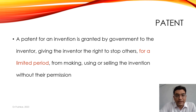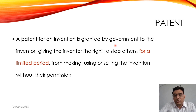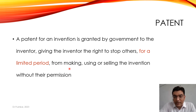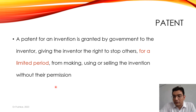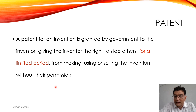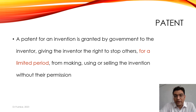What is a patent? A patent for an invention is granted by the government to the inventor, giving the inventor the right to stop others, for a limited period, from making, using, or selling the invention without their permission. So a patent is a form of intellectual property that grants the inventor an exclusive right for their invention, but for a limited period of time — not endless.